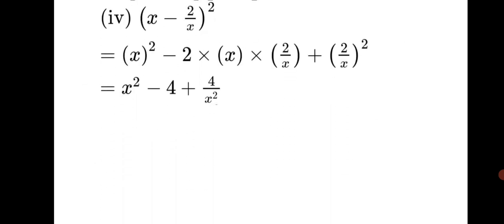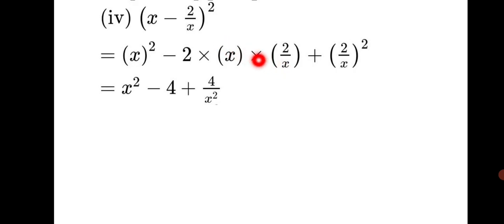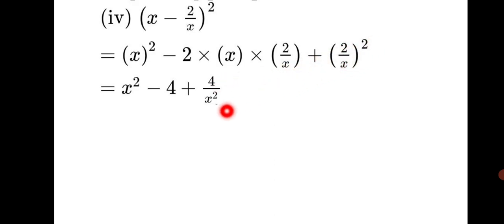Fourth question: x minus 2/x, the whole square. Using (a−b)² formula: x² − 2×x×(2/x) + (2/x)². Opening brackets: x and x cancel in the middle term, giving −4. The last term: 2² = 4, so 4/x². The answer is x² − 4 + 4/x².